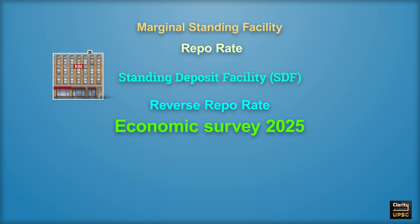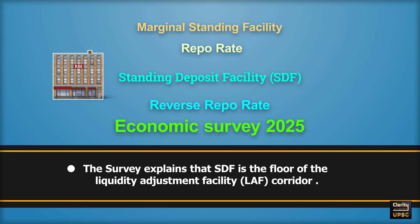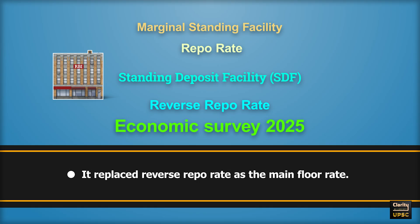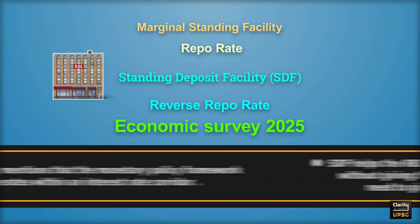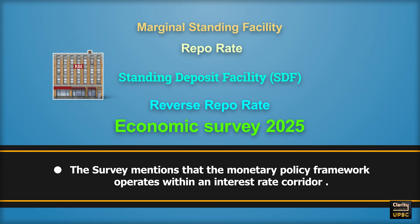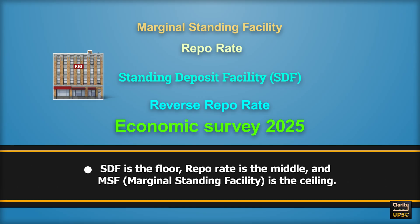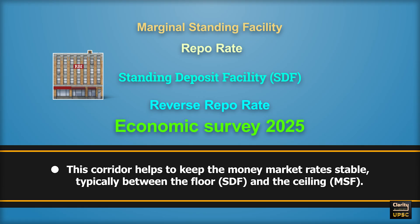Economic Survey 2025 explains that SDF is the floor of the Liquidity Adjustment Facility corridor. It replaced reverse repo rate as the main floor rate. SDF helps RBI absorb surplus liquidity from banks without giving any collateral — that is, RBI does not need to give bonds or securities in return. The survey mentions that the monetary policy framework operates within an interest rate corridor: SDF is the floor rate, repo rate is the middle, and MSF is the ceiling. This corridor helps keep money market rates stable, typically between the SDF floor and MSF ceiling.